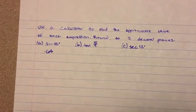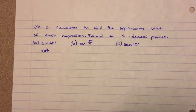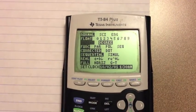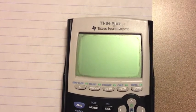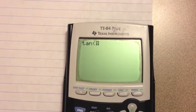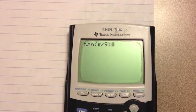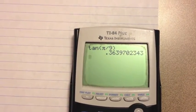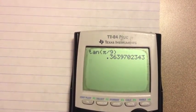For the next one, tan pi over 9, since it's in radians, you want to change your mode back to radians. And then just type it in, tan pi over 9, and that's going to equal 0.36.